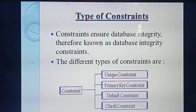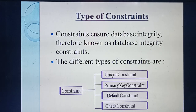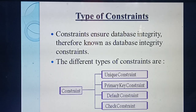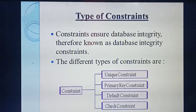Using constraints you can improve the accuracy and integrity of the database. There are mainly four types of constraints: Unique constraint, Primary Key constraint, Default constraint, and Check constraint. Now we are going to study each constraint in detail, one by one.